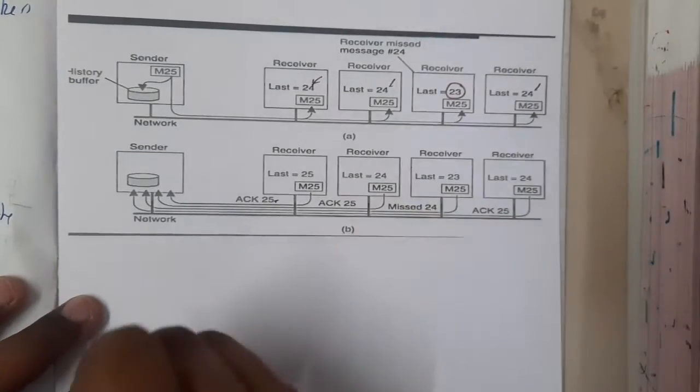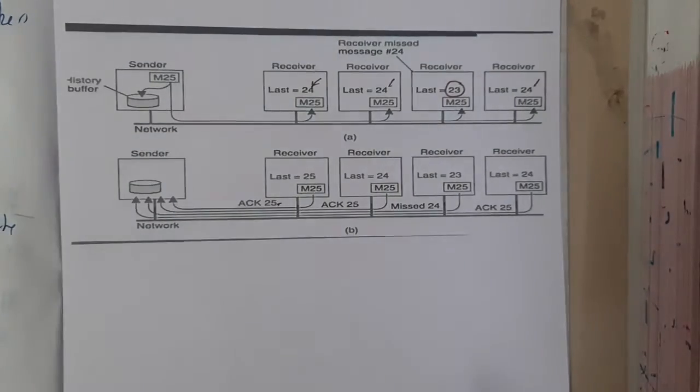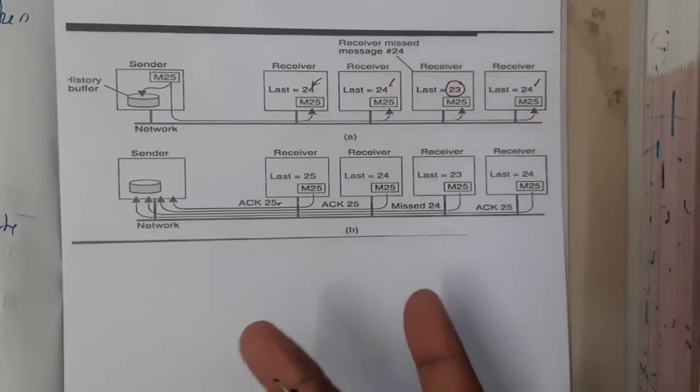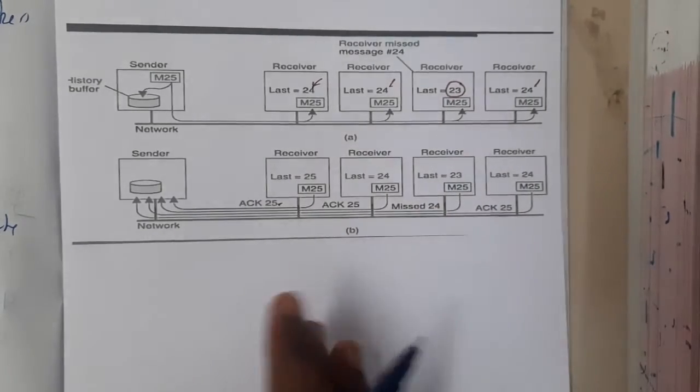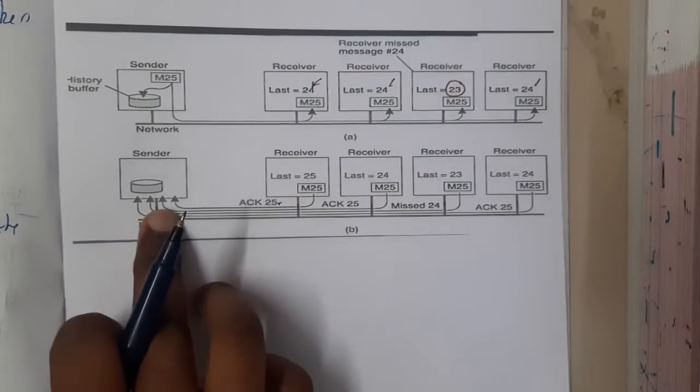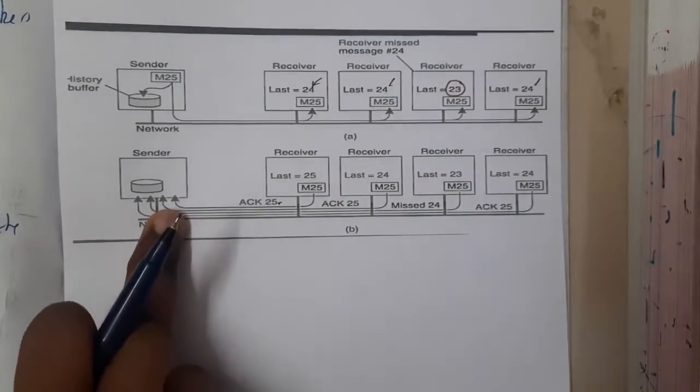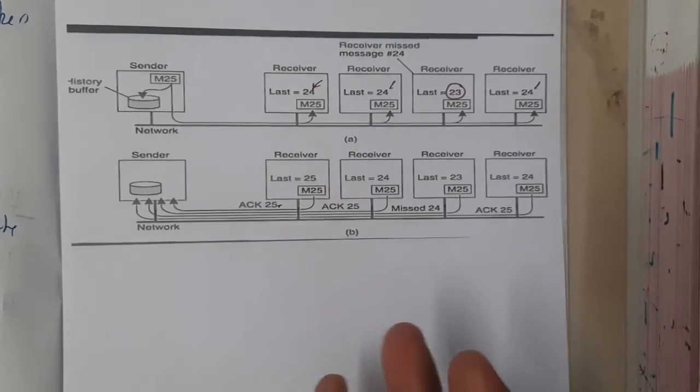Whereas here it cannot accept the 25th packet because it needs the 24th packet in between that is missing somewhere. That is the reason why you will be saying to the server or the sender that, "Please send me 24 again, please please please." And again, the next one is also received, so that will also send acknowledgement. So in this situation, this receiver will get the packet as per its request.